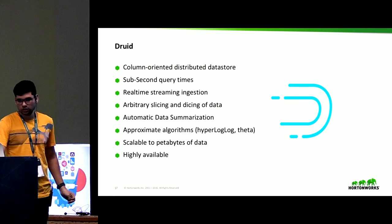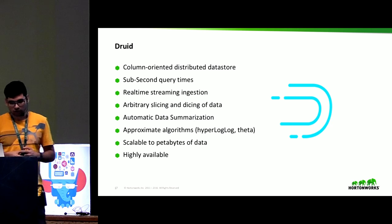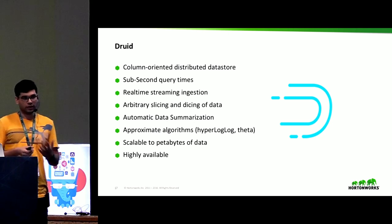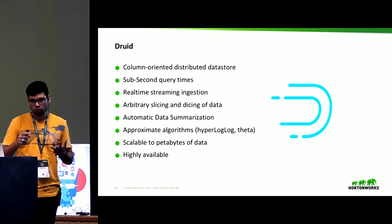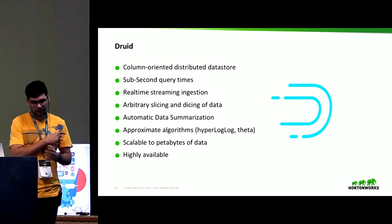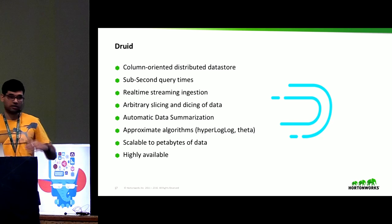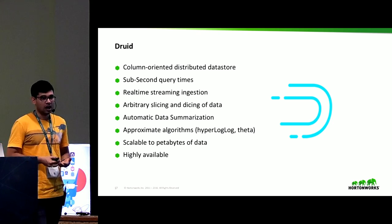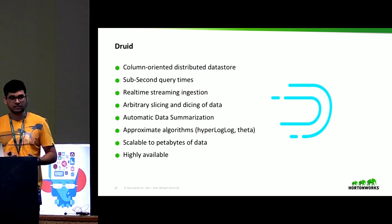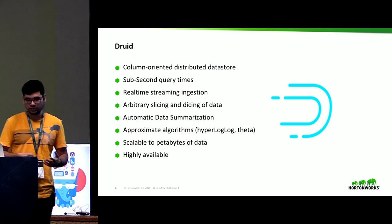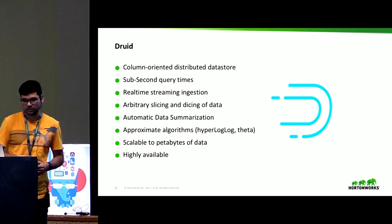The solution I'm going to discuss for the data store is Druid, which I work on. Druid is a column-oriented distributed data store which can provide sub-second query times. It supports both real-time streaming ingestion as well as batch ingestion via Hadoop or Spark, and can pull data from Kafka or other messaging brokers. It supports arbitrary slicing and dicing, uses concepts like automatic data summarization and approximate algorithms to provide fast query response times. It has been scaled to petabytes of data in production and is highly available.